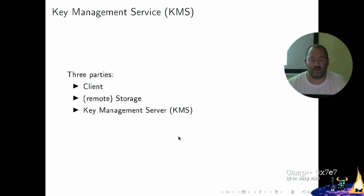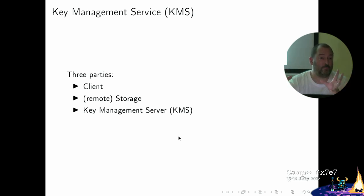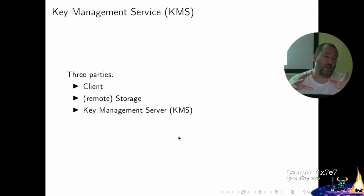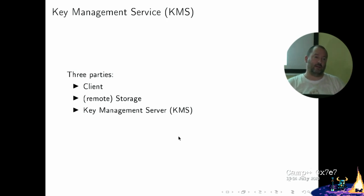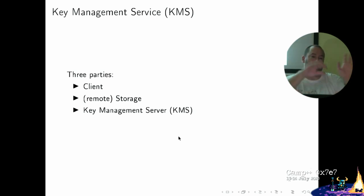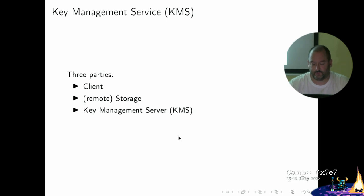Then we have a key management service — and now we're getting into what Klucznik is. In a key management service, you have three parties: a client trying to do things, a storage which is probably remote and very good at storing large amounts of data, and a key management service which is very good at protecting keys. We compartmentalize and separate the roles of storing data and handling the encryption of that data, with the client orchestrating operations — encryption, decryption, etc. This is useful in cloud or automated environments.